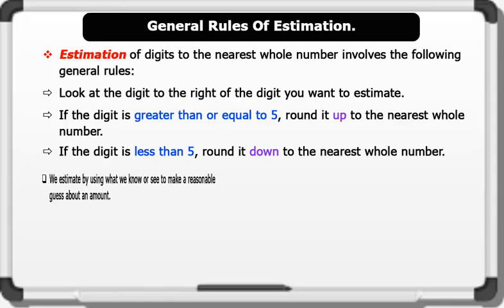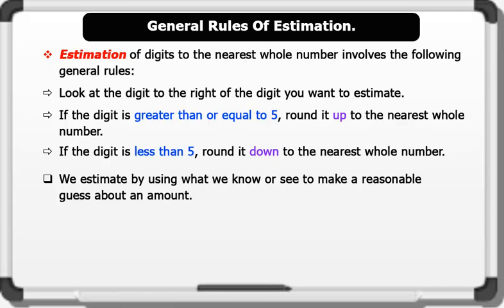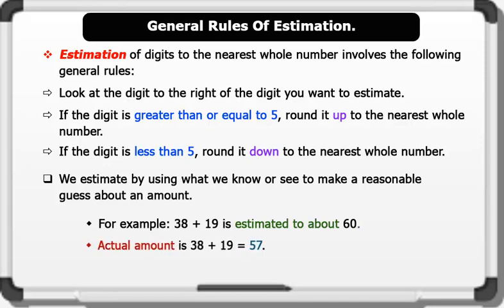Note that we estimate by using what we know or see to make a reasonable guess about an amount. For example, 38 plus 19 is estimated to about 60. But the actual amount is 38 plus 19 equals 57.